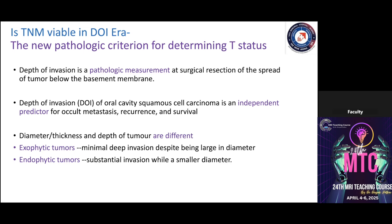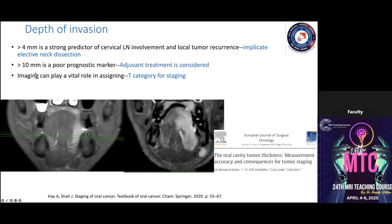Exophytic tumors have better prognosis than endophytic tumors, which have greater depth of invasion. If depth of invasion is more than 4 mm in a tongue carcinoma on coronal section, elective lymph node dissection should be considered during surgery due to higher risk of lymph node metastasis. If depth of invasion exceeds 1 cm, it is a poor prognostic factor in tongue carcinoma requiring urgent treatment.